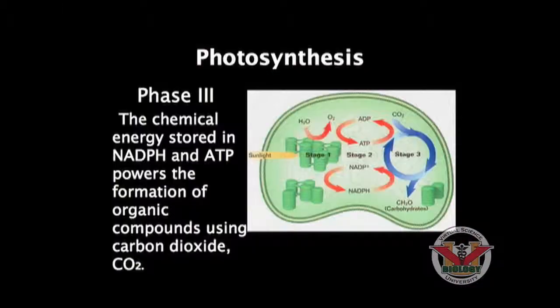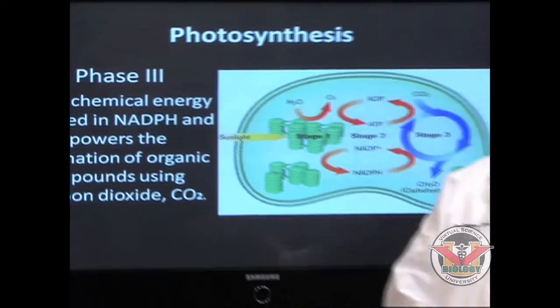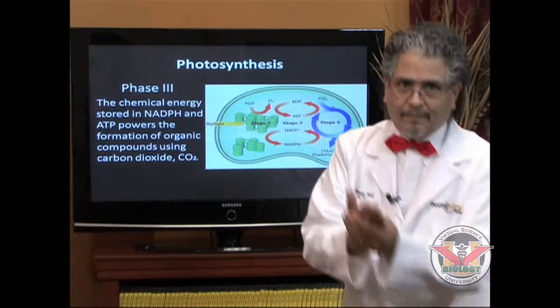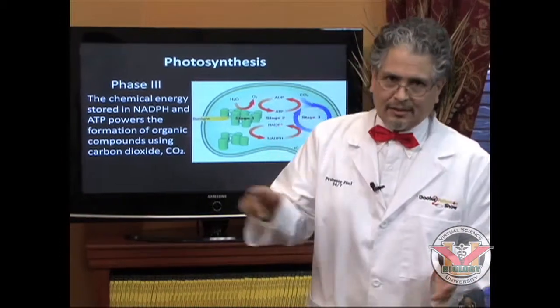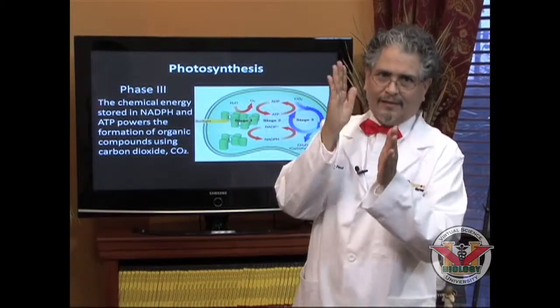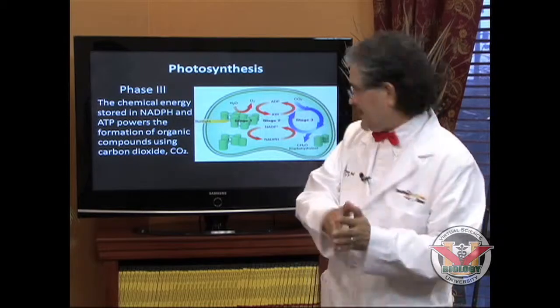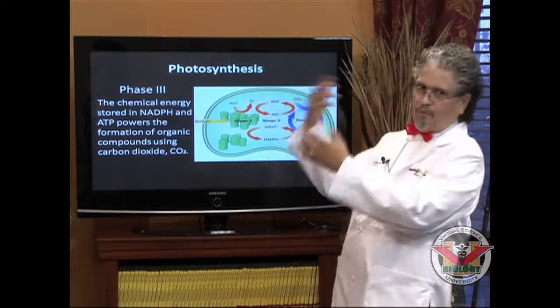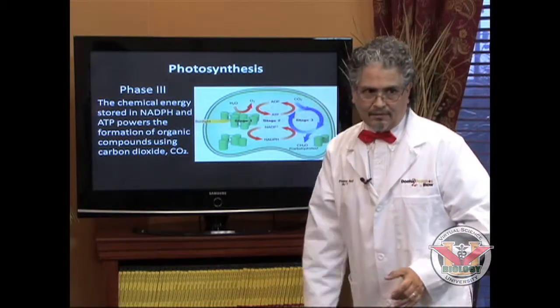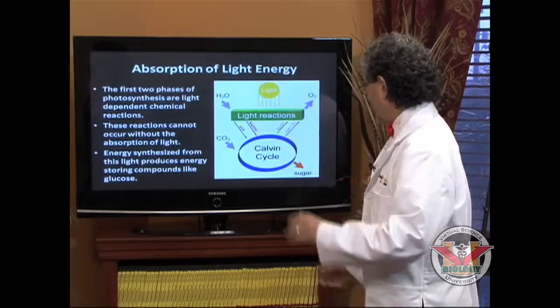Now, on phase three, the chemical energy stored in NADPH and ATP powers the formation of organic compounds using carbon dioxide or CO2. That's why, if you remember the equation at the very beginning, it said six CO2s. You've got to have that CO2 or carbon dioxide to be able to form all these organic compounds. Very good.